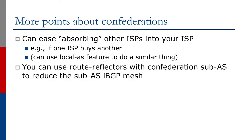Confederations could be useful for network operators who are absorbing other operators. For example, if one ISP buys another one, we can simply add the purchased ISP's AS into the existing confederation. It's a very simple migration rather than having to renumber the purchased ISP's routers into the new autonomous system. And we can scale the sub-AS IBGP by using route reflectors within it.